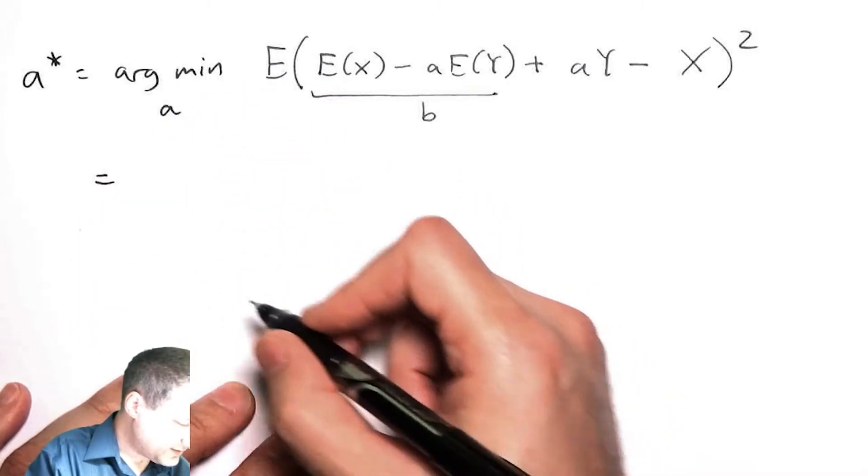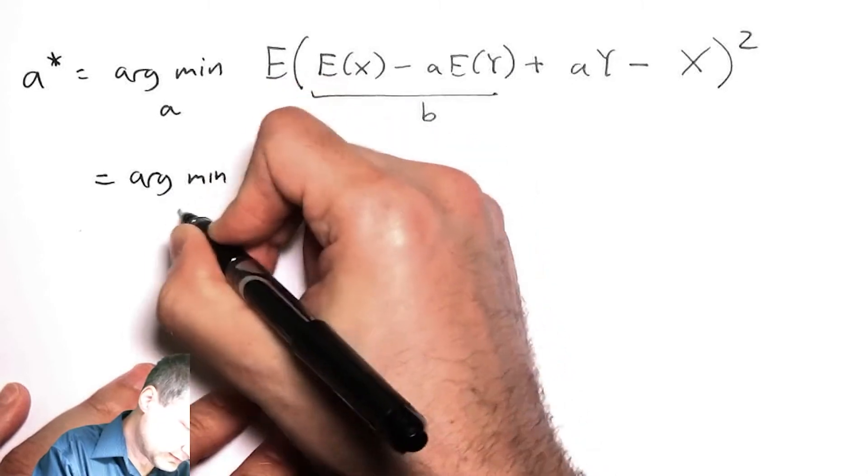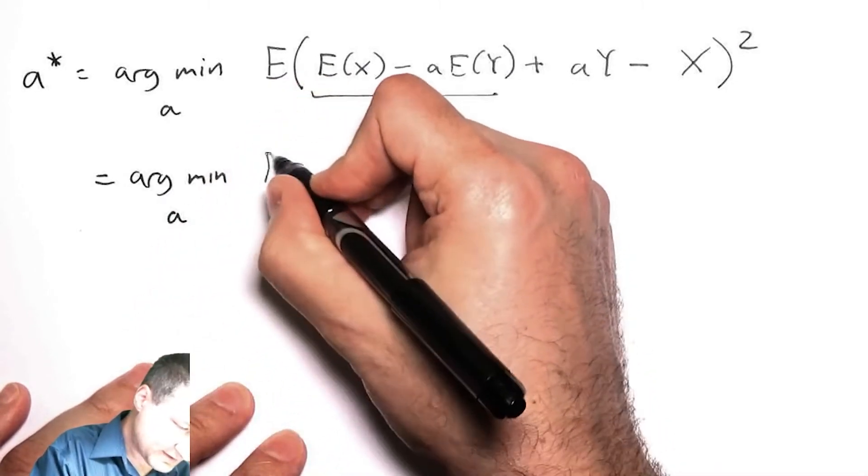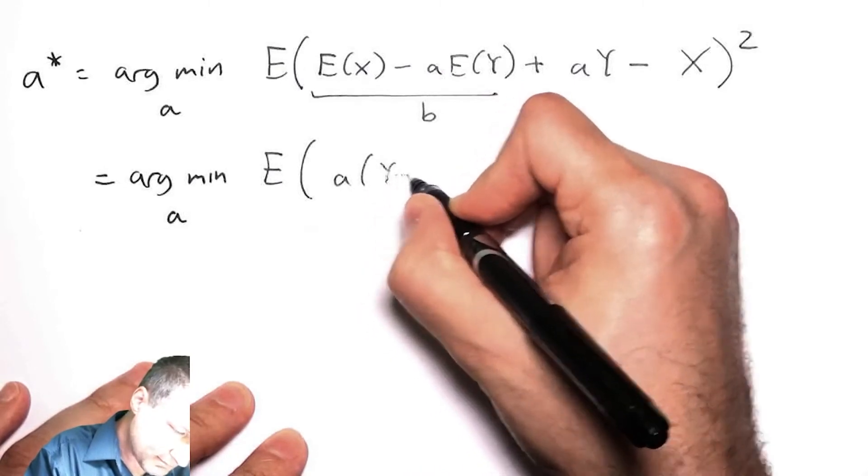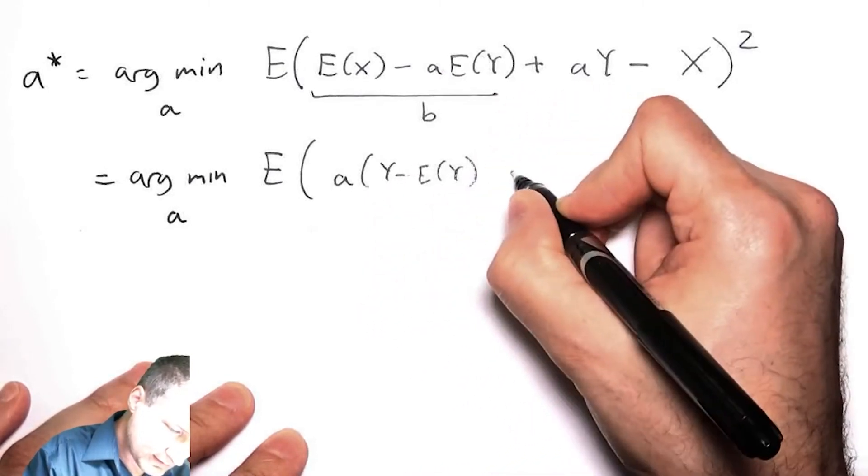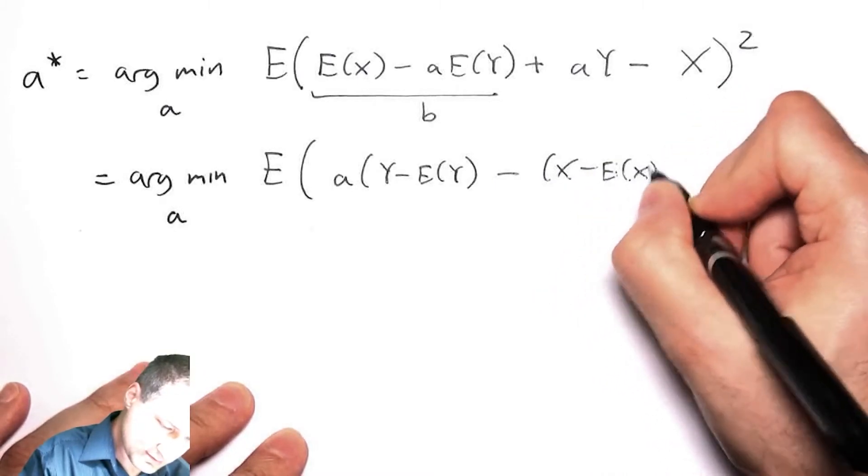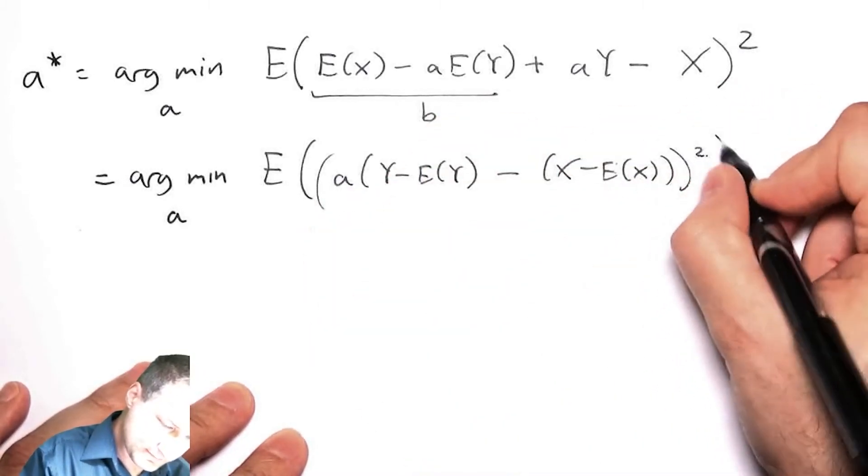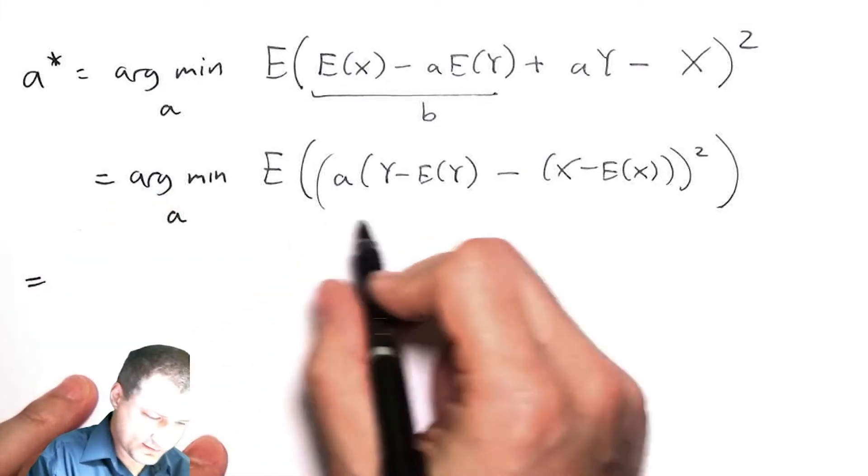So let me rearrange this so it's a little bit easier to read. This is like saying I have argmin of expected value of, I'm going to take the a parts out, I have Y - E(Y), and then I have X - E(X), and I'm squaring that.